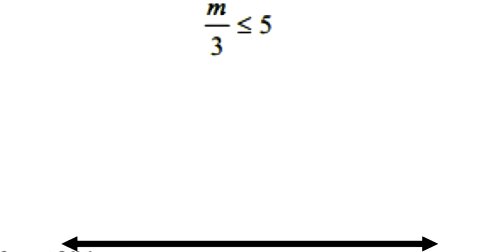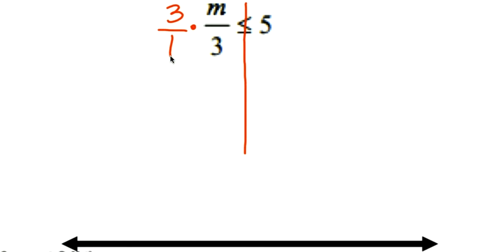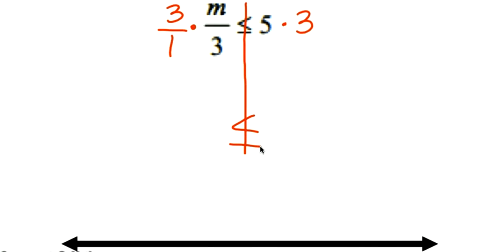The second inequality — I'm going to draw my line. I see division happening, so I have to multiply. When multiplying by a fraction, I must write my multiplication as a fraction; otherwise I can simply write the integer. I'm going to multiply by 3 on both sides. I did not multiply by a negative, so I keep my inequality symbol as less than or equal to. The 3s cancel out, leaving m on one side, and 5 times 3 is 15.